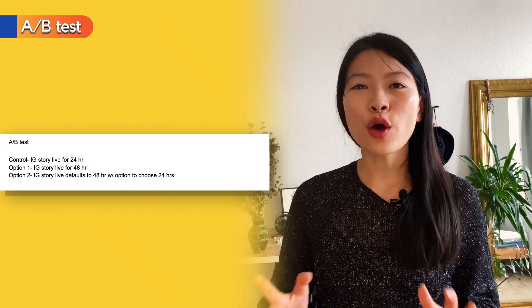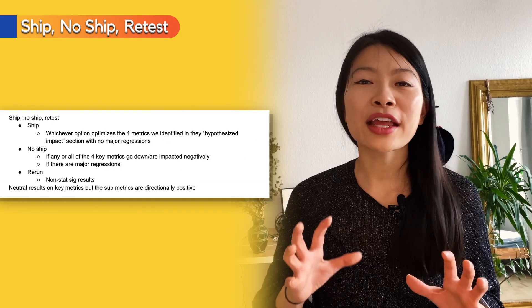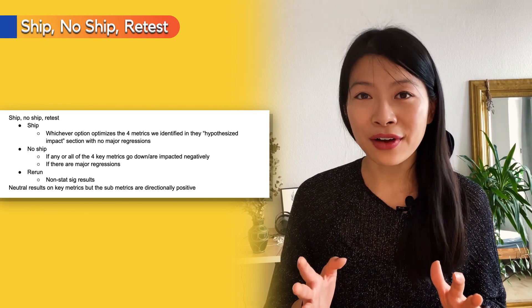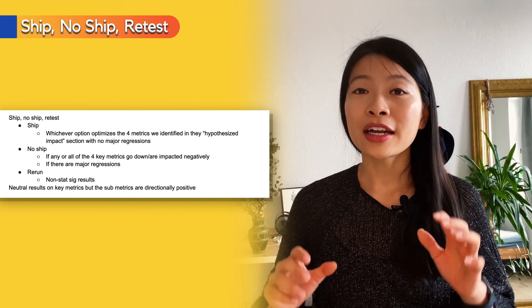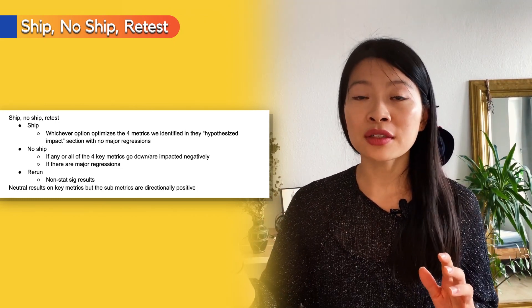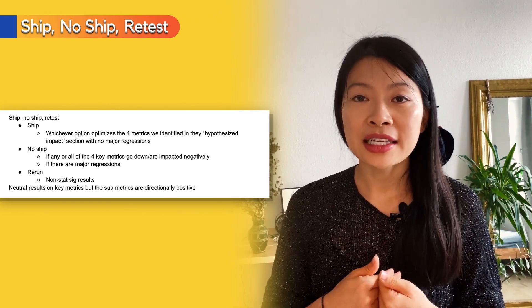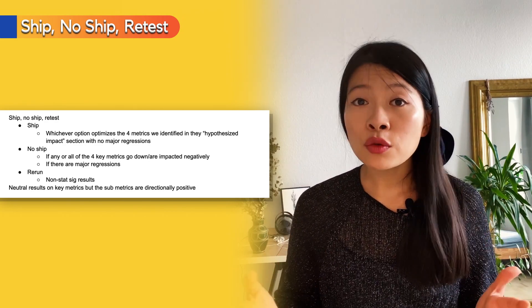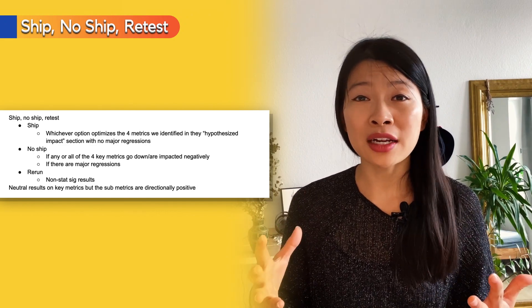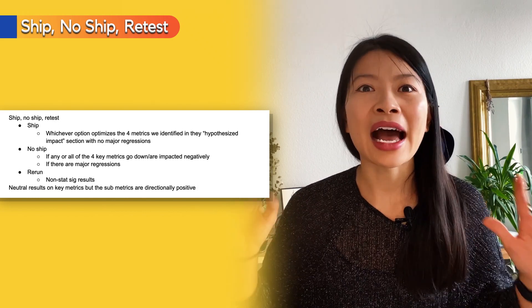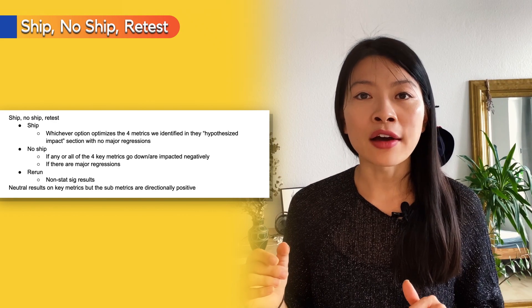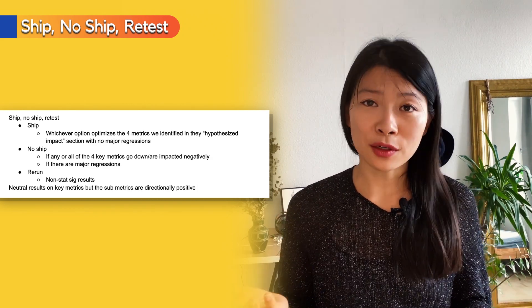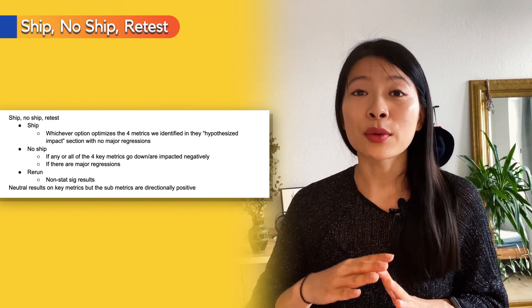Lastly, the ship, no-ship, or retest scenarios. I would ship the option showing the highest incremental impact on key metrics with no major regressions. A no-ship decision would mean test options showed a negative impact on key metrics — for example, if 48 hours led to less engagement per story because users felt overwhelmed — or if it caused a regression on important metrics like ad views or significantly cannibalized feed time spent. I'd retest if results weren't statistically significant or were neutral on key metrics but directionally positive on others.